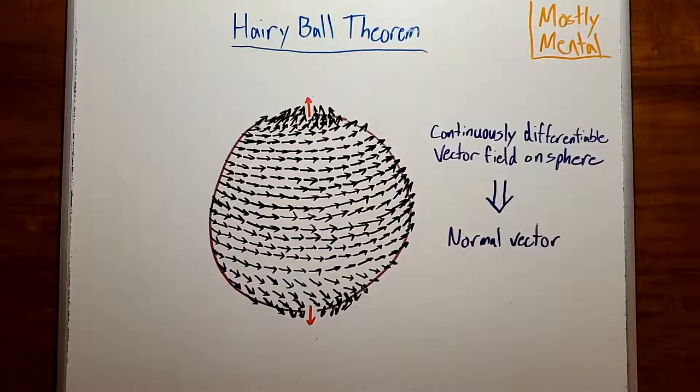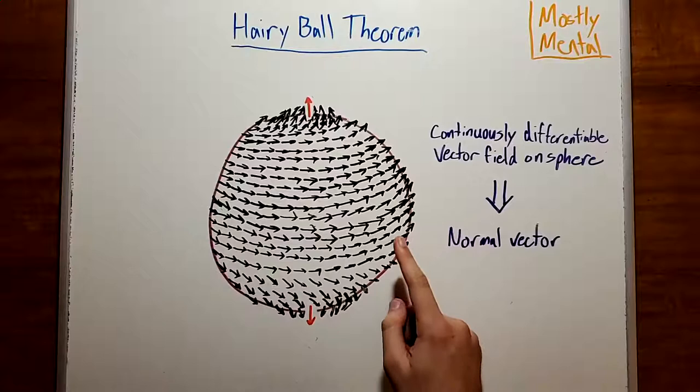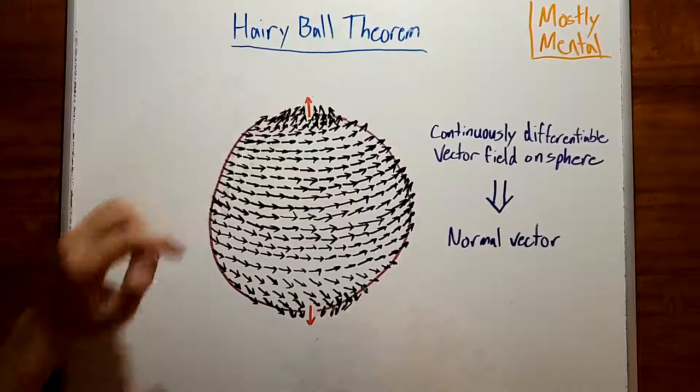Informally, the theorem says that you can't comb the hair on a coconut without creating a cowlick. That is, if you have a hairy ball and you try to comb all the hair flat, with nearby hairs pointed in roughly the same direction, there will always be some hair sticking straight up. For instance, if we try to flatten the hair around in a circle, like so, that'll work fine near the equator, but at the poles, we'll be stuck with hair pointing straight up and straight down.